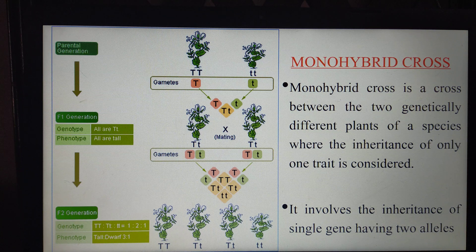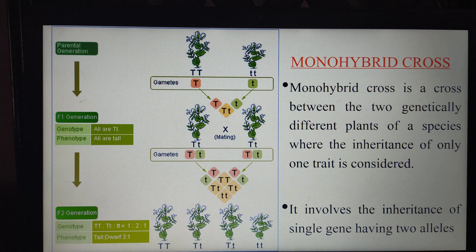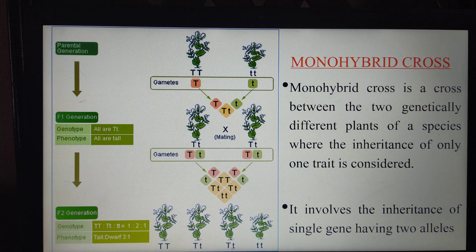Regarding plant hybridization, a hybrid is a plant which is formed by crossing two genetically different plants. When two genetically different plants are crossed, the product we get is what we call a hybrid. The term mono refers to single. So monohybrid is the term used to define a hybrid which is formed considering only one character.